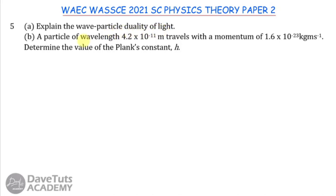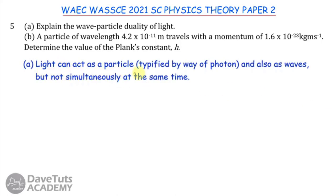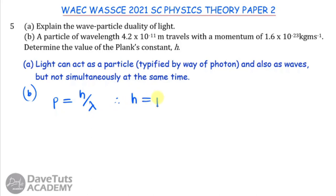In this question, we explain wave-particle duality of light and determine Planck's constant. Wave-particle duality means light can act as a particle, as typified by a photon, and also as waves, but it cannot act as both at the same time. Given momentum p = 1.6 × 10⁻²³ kg·m/s and wavelength λ = 4.2 × 10⁻¹¹ m, the formula is h = p × λ.